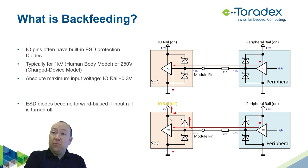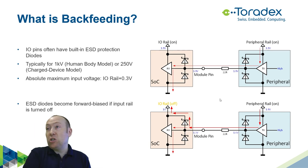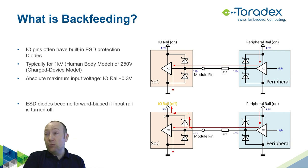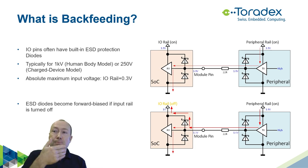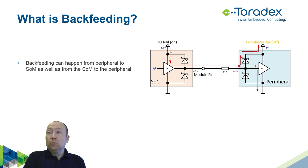When we turn off the IO rail on the SOC side, the upper diode gets forward biased. We get a stronger current than the signal current flowing from the peripheral rail, through the output buffer, through the ESD diode to the IO rail. This lifts up our IO rail, resulting in a residual voltage on it. This is backfeeding. Of course, backfeeding can also occur in the other direction — where our module is the output and you have a peripheral that you've turned off, for example to save power.